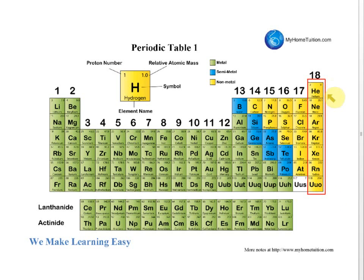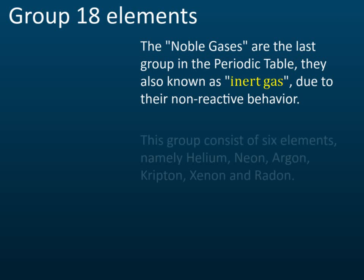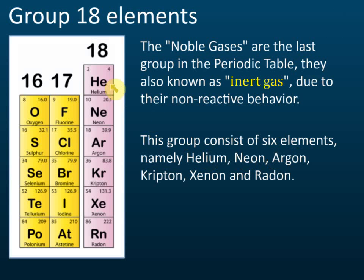In our syllabus, you need to memorize the first four elements — which is the first, second, third, and fourth. For the last two, xenon and radon, you need to know their applications, which we will discuss later. Group 18 consists of six elements: helium, neon, argon, krypton, xenon, and radon.